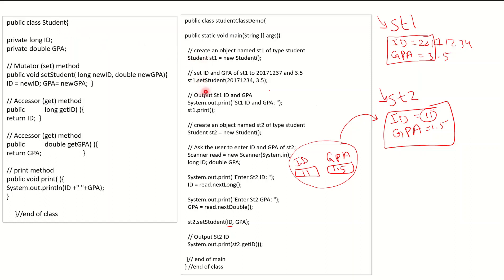If you need to change the value of an object, you have two ways: either provide the values directly in code, or read them from the user. In both cases you must call set. You can say setStudent with hardcoded values, or ask the user to enter values, save them in variables, and then call setStudent with those variables.